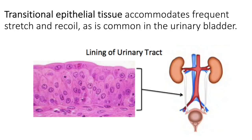The final epithelial tissue is transitional epithelial tissue. It lines much of your urinary system — the urinary bladder and the ureters. This tissue is particularly suited to accommodate a constant stretch and recoil — the active process occurring along the wall of your urinary bladder as it fills with urine and then releases it. It is well suited for that distension, meaning a stretch action along the wall of that organ.